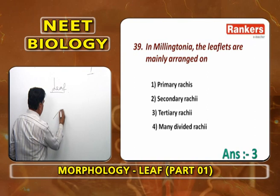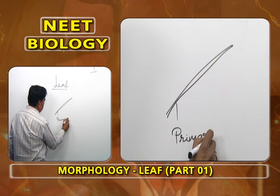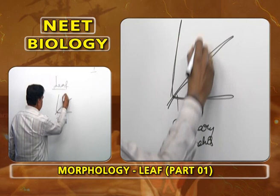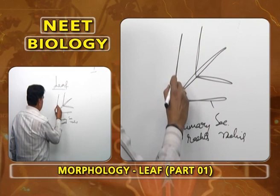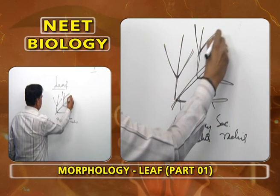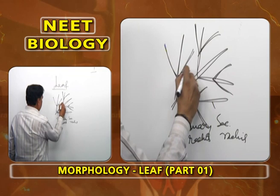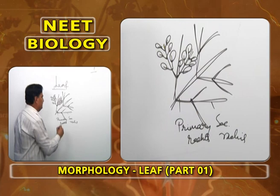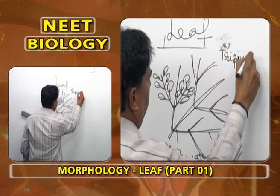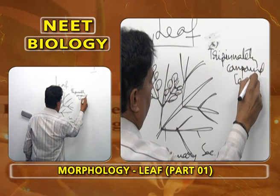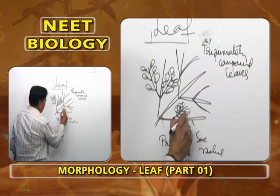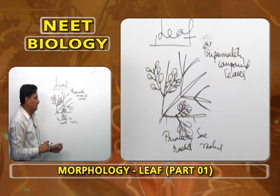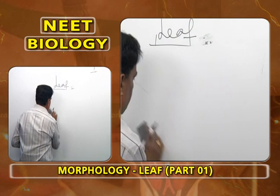In Melingtonia, leaflets are arranged on both sides of the tertiary rachis. It is a tripinnately compound leaf: primary rachis produces secondary rachis, secondary produces tertiary, and leaflets are arranged on both sides of the tertiary rachis.